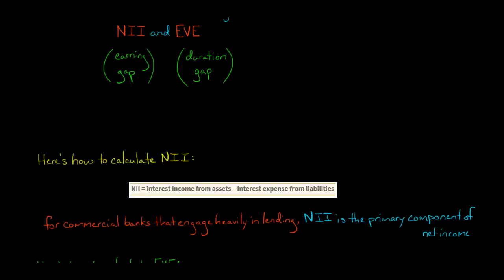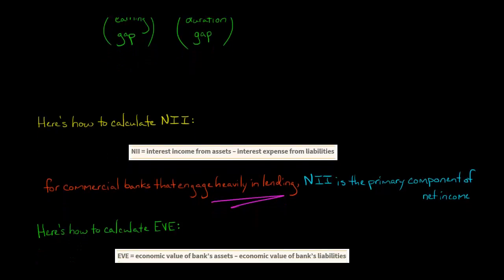Now, if you have a commercial bank that engages heavily in lending, fixed rate mortgages, floating rate, whatever, they're doing a lot of lending, whether it be commercial, residential, the net interest income is going to be the major component of that bank's net income. So this is very important, net interest income.